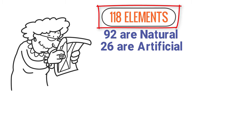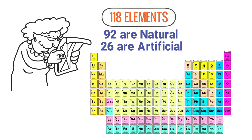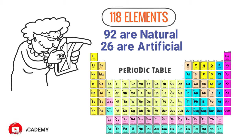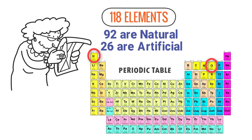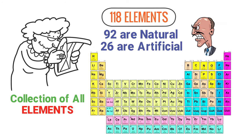Remember that these 118 elements are listed in a chart commonly known as the periodic table. For example, you can spot C — carbon — on the periodic table. Similarly, you can spot oxygen and hydrogen on the periodic table. Thus, whenever you see the periodic table, think of it as the collection of all 118 elements that exist in nature.